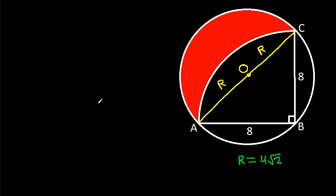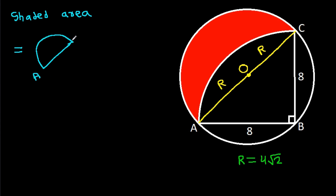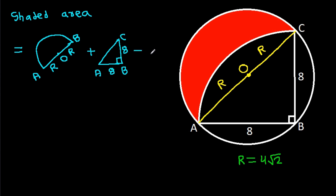Now, the shaded area will be equal to the area of the semicircle with center O and radius R, plus the area of triangle ABC where AB is 8 and BC is 8, minus the area of the quarter circle where AB is 8 and BC is 8.